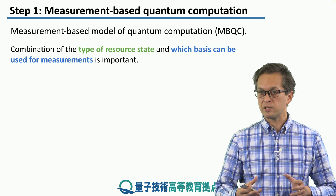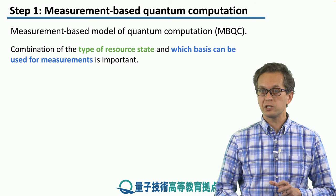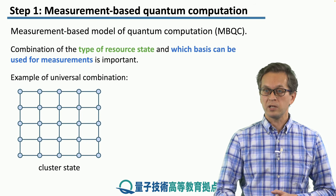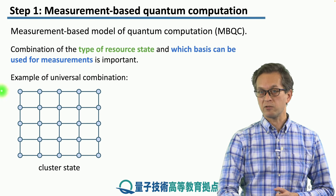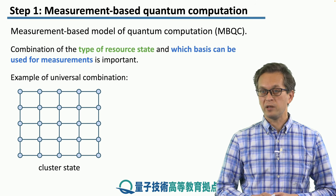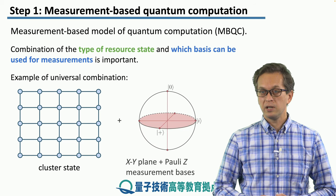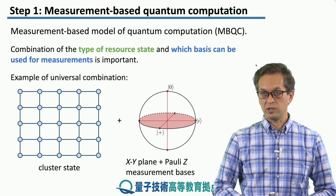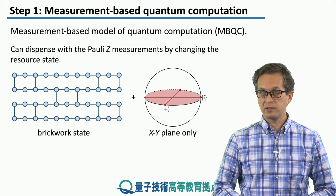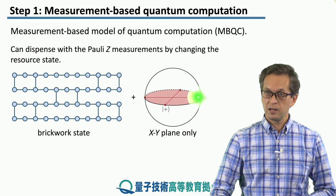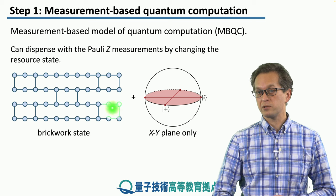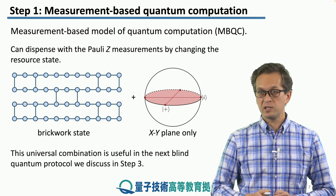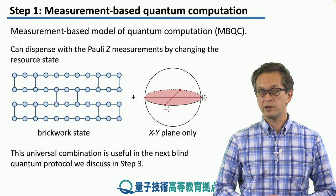Just like there are certain sets of universal quantum gates in the quantum circuit model, the combination of the type of resource state and which basis we can use for measurements is important. For example, a universal combination is the following. A graph state given by this graph, so it's a regular 2D structure. Such a graph state has a special name and it's called the cluster state. And if we can measure in the x-y plane, as well as perform z measurements, then we can perform any quantum computation that we wish. We can also dispense with the z measurements, and we can use only measurements in the x-y plane if we are able to prepare the following resource state. It looks very similar to a cluster state, but it's got a different structure. This state is called a brickwork state. And it's this particular universal combination that's going to be relevant for our discussion in this and the next step.